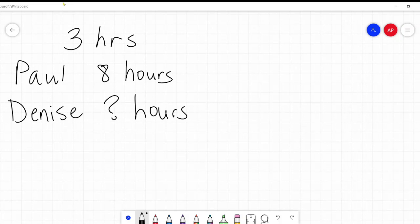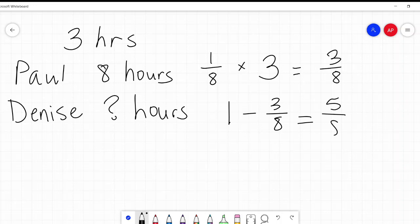So here's how we're working backwards. So they're working for three hours. How much does Paul complete in one hour? Well, he takes eight hours to do the whole thing. So he completes one eighth of the task every hour. Well, he worked for three hours. So how much did he complete? He completed three eighths of the task. Leaving what for Denise to complete? The whole task minus three eighths of the task leaves five eighths of the task. To show you that just real quickly, one would convert to eight eighths. And then that's how you know that's five eighths.